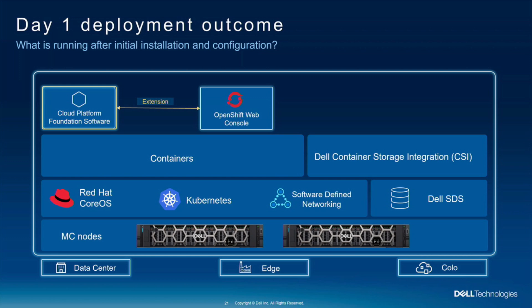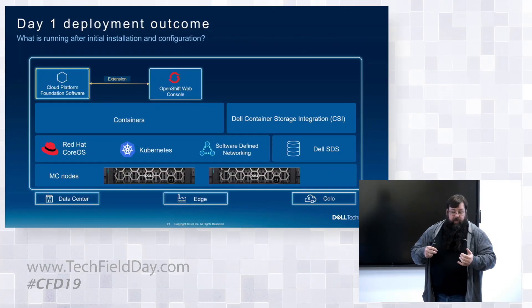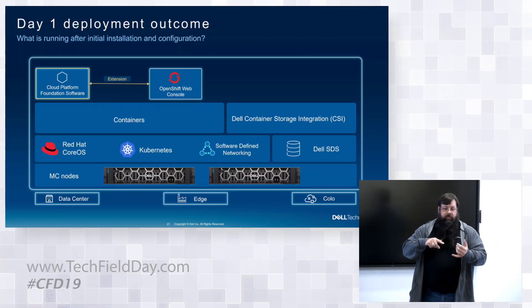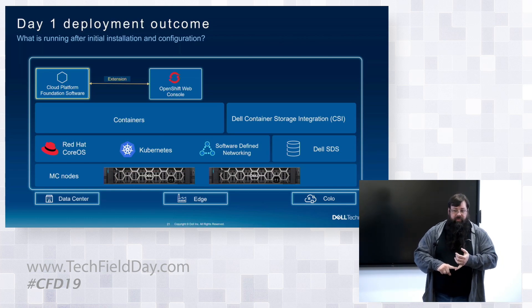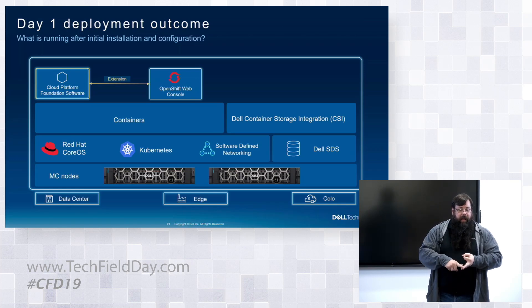The secret sauce that Sam was talking about has to do with that Cloud Platform Foundation software. In the case of OpenShift, that Cloud Platform Foundation software is running in containers on top of OpenShift. What you come out with on the other end is a fully configured OpenShift cluster with the CSI connected to the backend storage and the Apex Cloud Platform Foundation software.